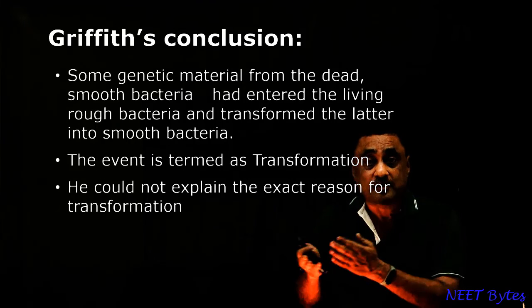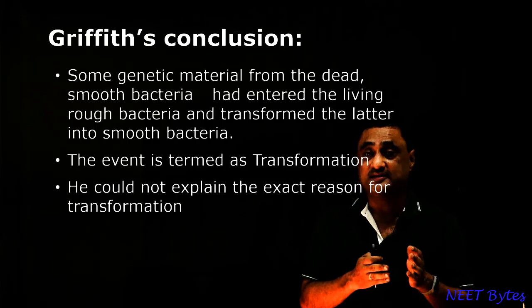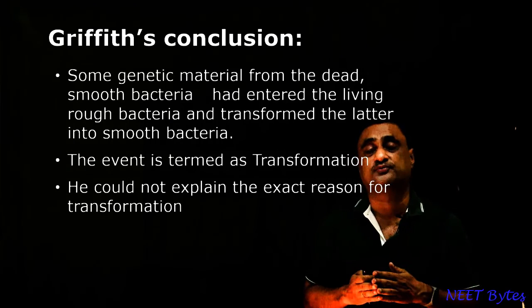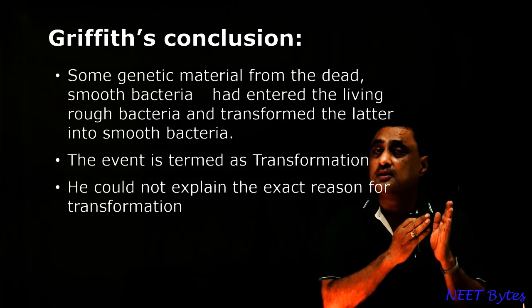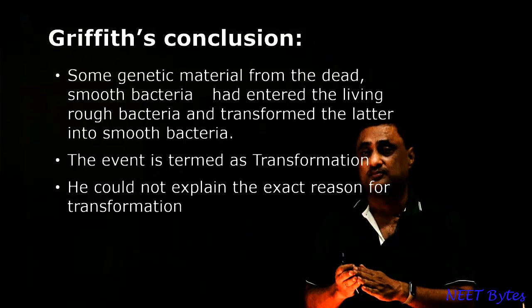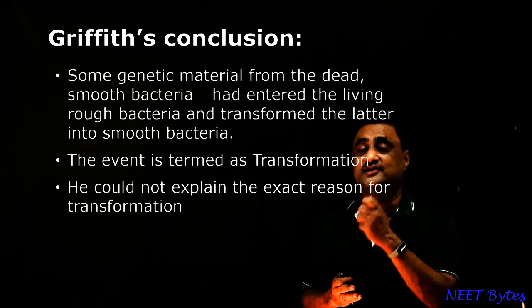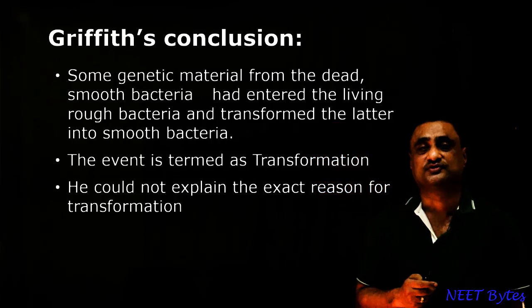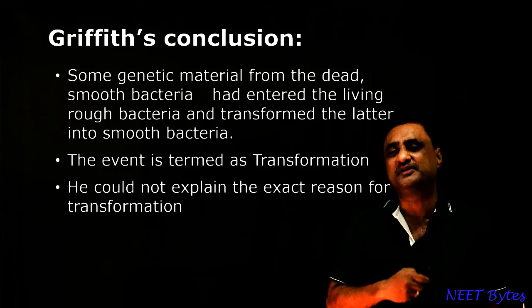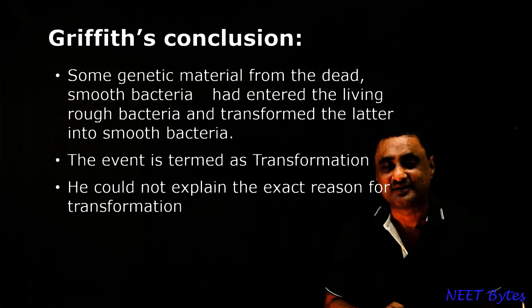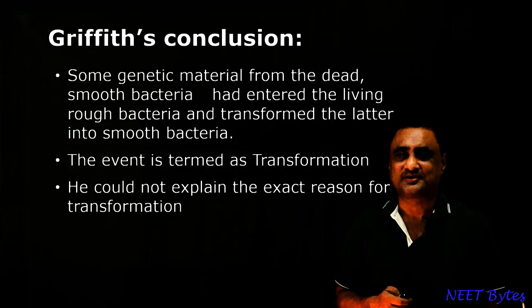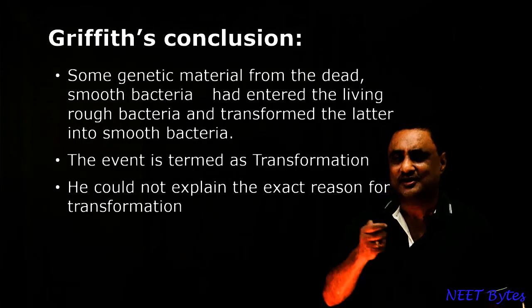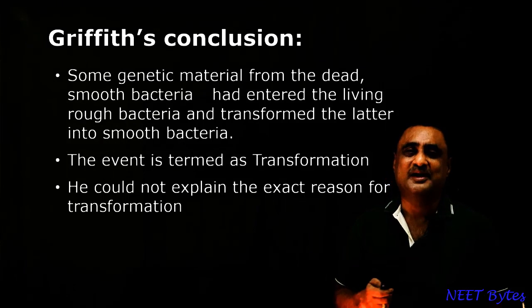Why did the mouse die? The mouse died due to the S-forms. But there were no live S-forms in the fourth experiment, so how did S-forms appear? The S-forms came after the conversion of the rough form into S-form under the influence of the heat-killed S-form. This event was called transformation. He could not explain the reason. Later on, the reason was provided by Avery, MacLeod and McCarty. We will see how in the next session.